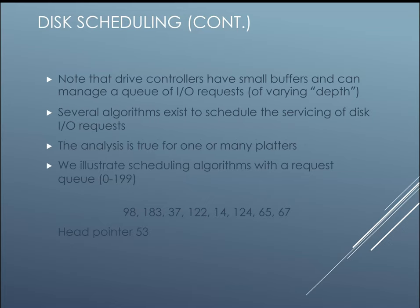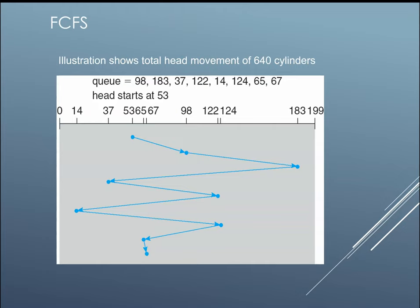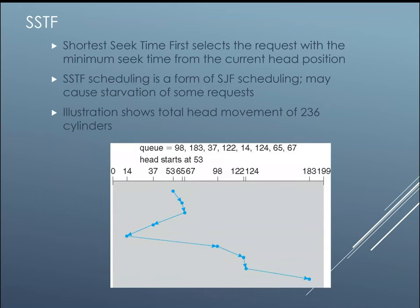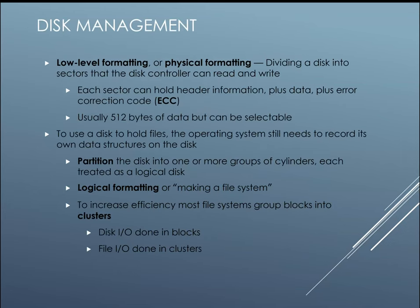For disk scheduling, drive controllers have small buffers and can manage a queue of requests, and algorithms exist to schedule the servicing of IO requests. With a hard drive you have to move the head from location to location across the platter, whereas with an SSD you can access data directly. One scheduling method is Shortest Seek Time First (SSTF), which finds and services the shortest seek job first, but it does leave you open to starvation. First Come First Served is also a common algorithm.